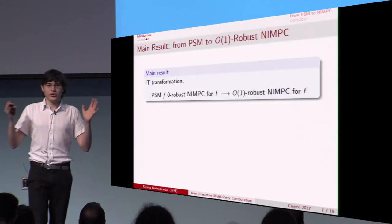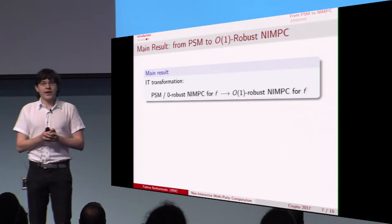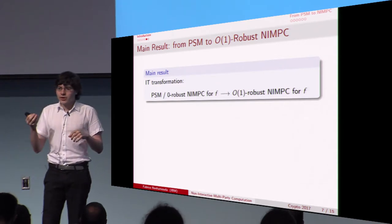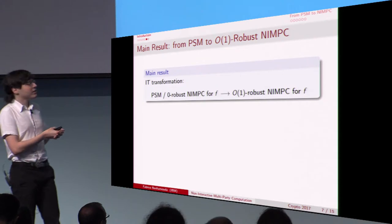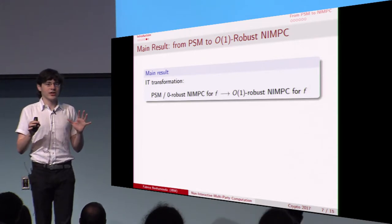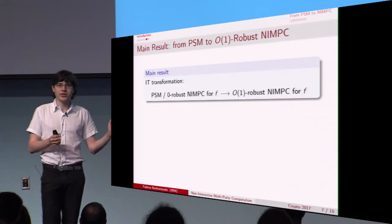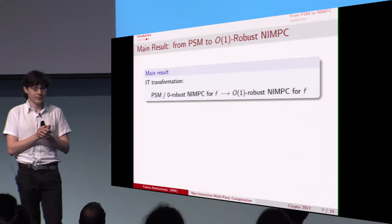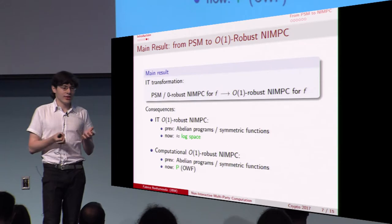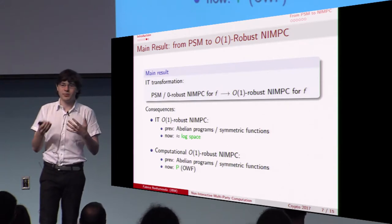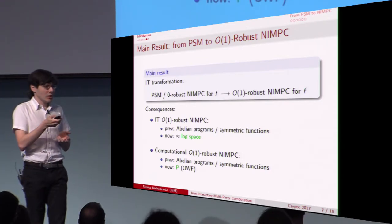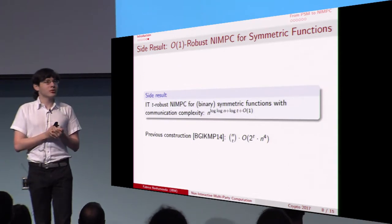In this paper we bridge the gap between these two settings. We show that you can take any PSM or NIMPC secure against no collusion and transform it into an NIMPC which is secure against constant-size collusion for the same function. The transformation is information-theoretic, requiring no assumptions. In particular, we obtain information-theoretically constantly-robust NIMPC for log space, and computationally secure constantly-robust NIMPC for P, by combining this transformation with previous constructions.